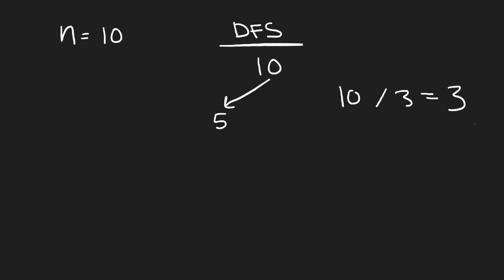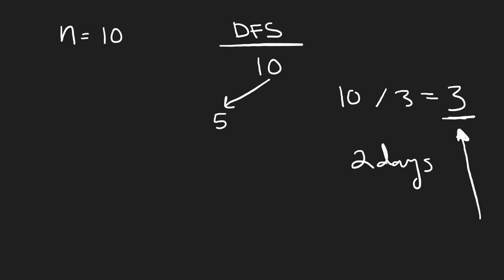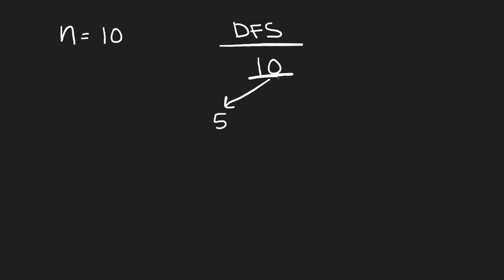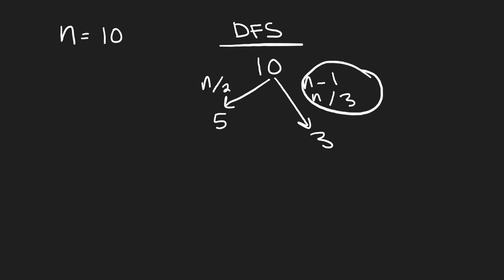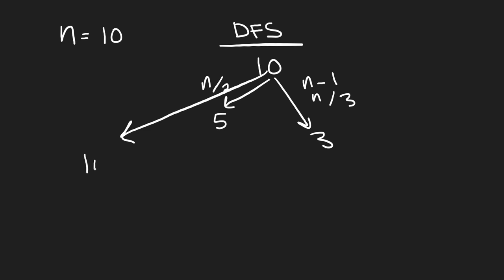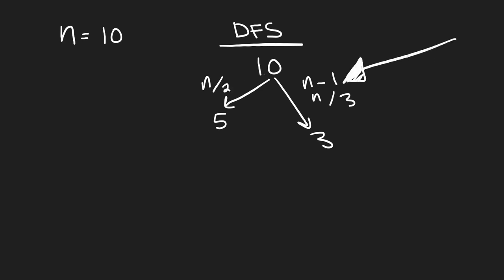10 divided by three gives three remainder one, so if we ate one orange from 10 and then divided by three, that would take two days total and leave us with three oranges. We don't need a separate path for N minus one leaving nine, because it's implied — we're still counting those subtracted days. Continuing: from five, it's not divisible by two, so five mod two equals one remainder, meaning we subtract one and divide by two to get to two — taking two days.